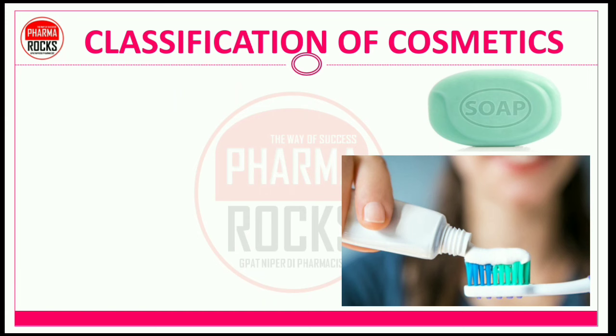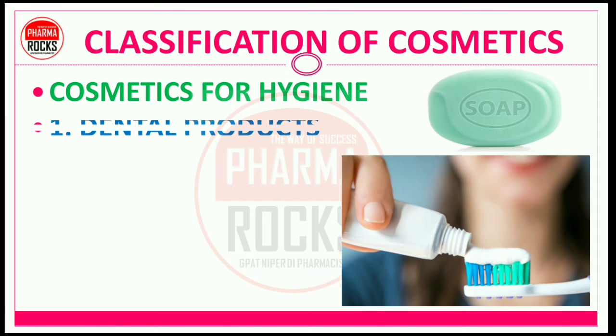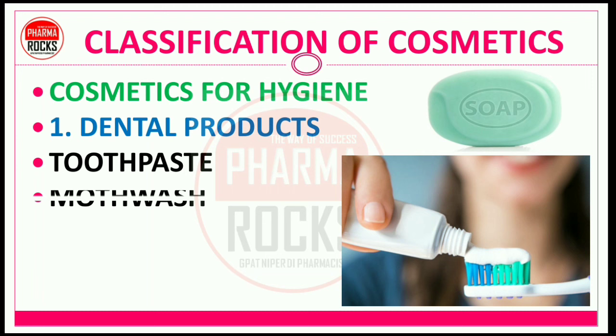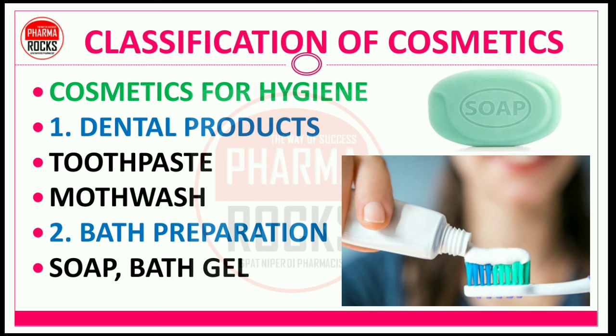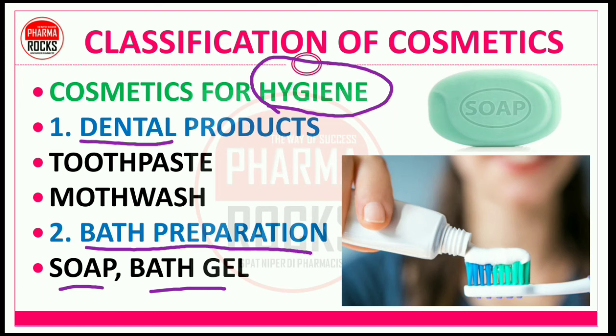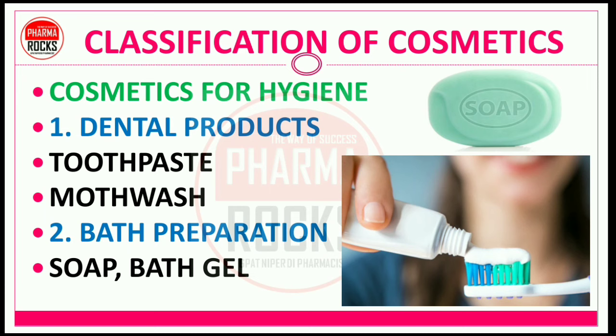After that, cosmetics for hygiene: dental products like toothpaste and mouthwash, and bath preparations like soap and bath gel. Usually these are not covered strictly under cosmetics but are considered hygiene products — soap and bath gel for body hygiene, and mouthwash and toothpaste for dental hygiene. This is the detailed classification of pharmaceutical cosmetic preparations. If asked for a short note on classification of cosmetics, explain all categories in detail.